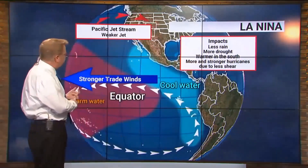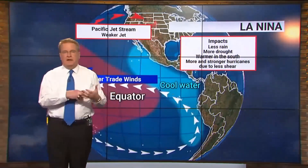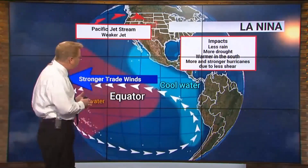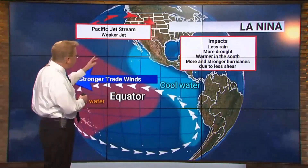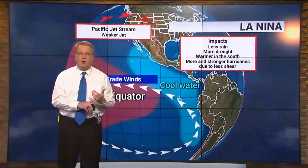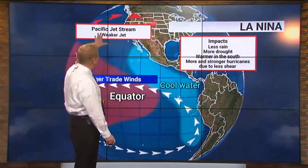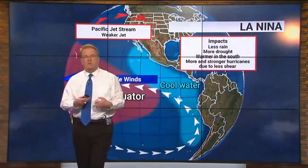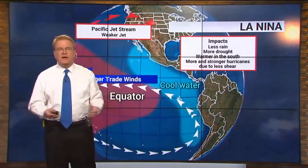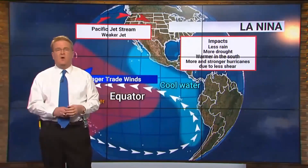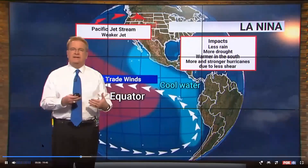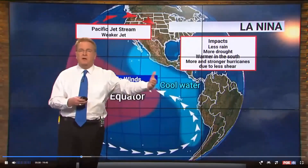La Niña also causes the south to be warmer — with less rain, less cloud cover, and more sunlight, you have warmer days. Also in hurricane season, this pattern causes there to be more and stronger hurricanes because you no longer have the strong wind shear from the jet crossing the Atlantic, so tropical systems don't get disturbed. That's why La Niña and El Niño are important for meteorologists to understand — to better anticipate the kind of weather we may have for months into the future.